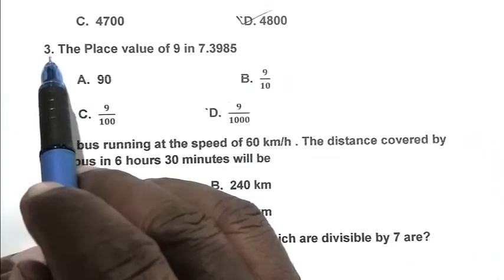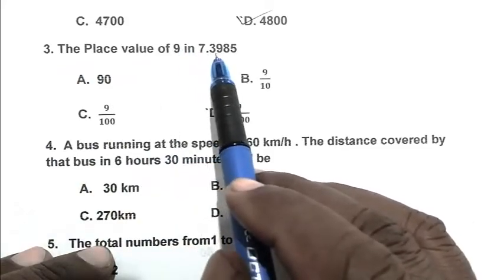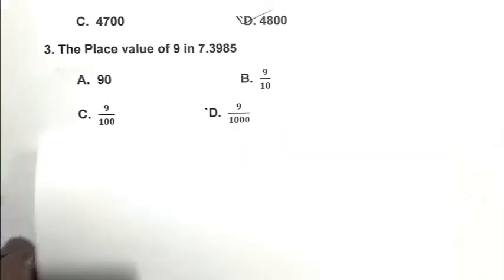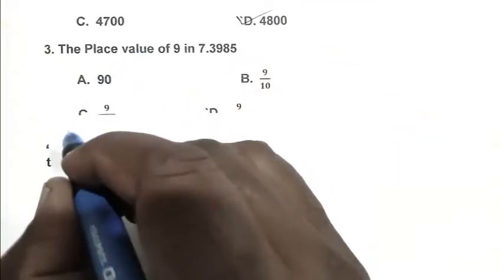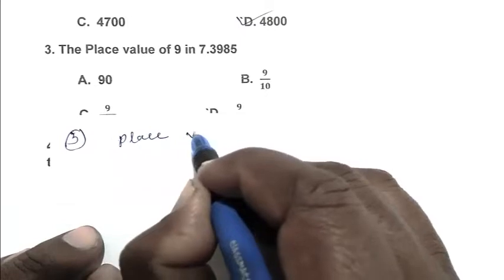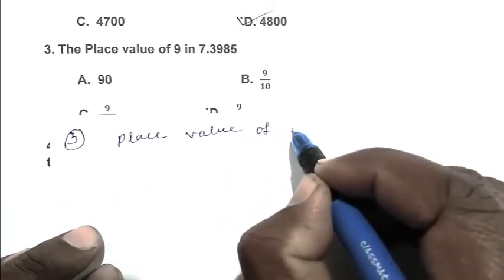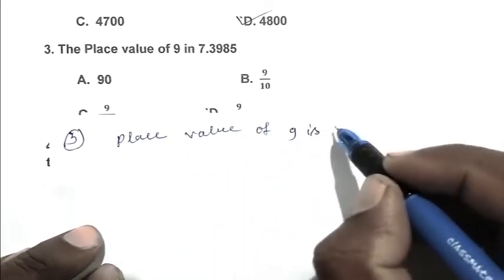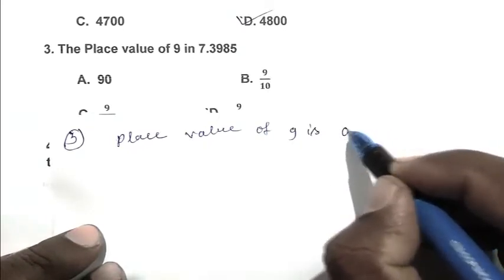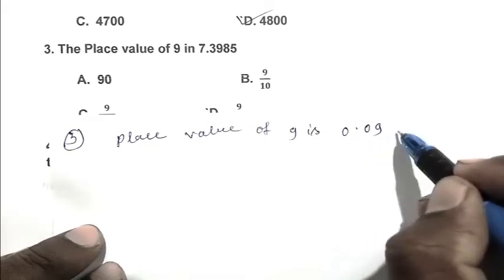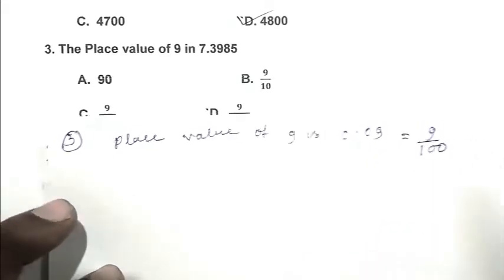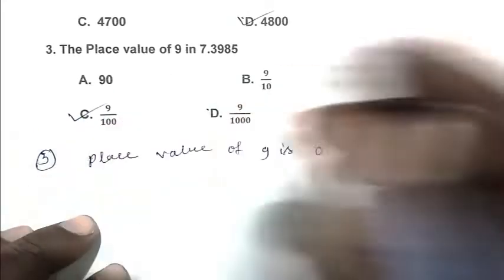Question number 3, the place value of 9 in 7.3985. Place value of 9 is 0.09, which is 9 divided by 100. So, C is the right answer.